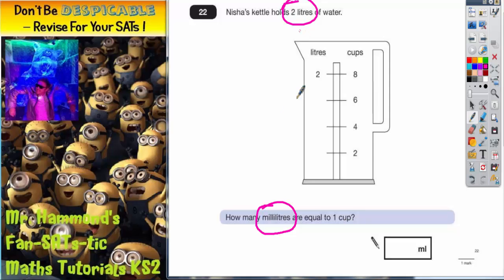Well, in the question it talks about millilitres and in the information at the start it talks about litres. So the first thing we need to make clear is that one litre is equal to 1000 millilitres. Therefore, two litres which is what we've got on the side of the cattle is equal to 2000 millilitres.